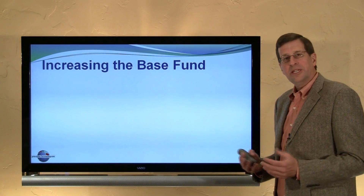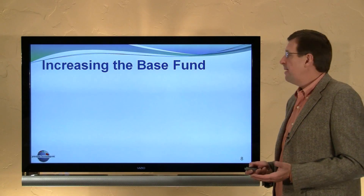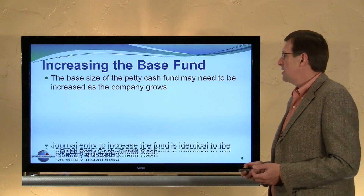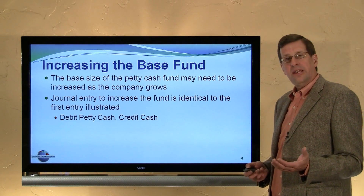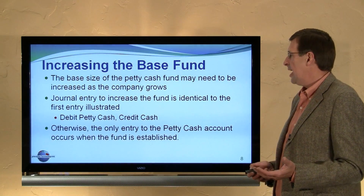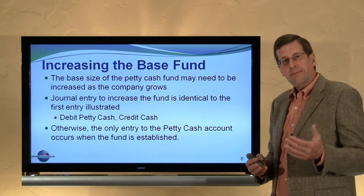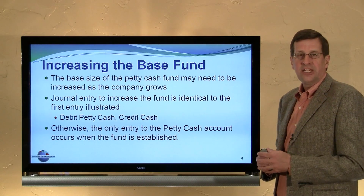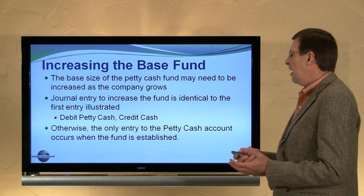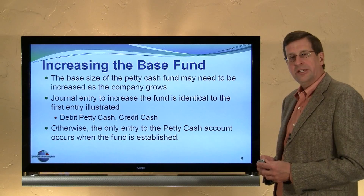The last thing to consider is the base fund. It might from time to time be desirable to change the amount in the petty cash fund. The base size may need to be increased as the company grows. The journal entry to increase the fund is identical to the entry used to establish the fund — that is, debit petty cash and credit cash. So if we were to add $500, we would debit petty cash $500 and credit cash $500. Otherwise, the only time we make an entry to the petty cash account is when the fund is initially established.